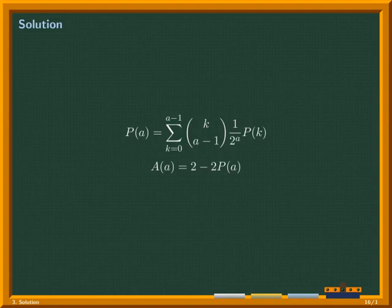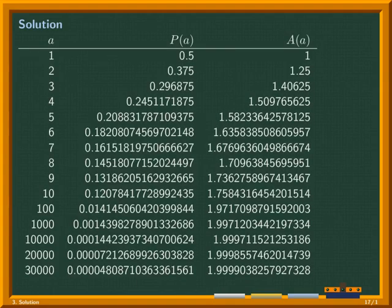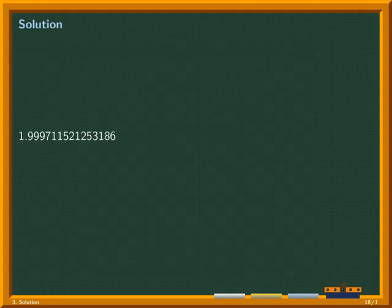There is no nice formula for p, but it can be generated by a computer program. Using our computer program, we get the following values. This nicely gives us our solution of 1.999711521253186.